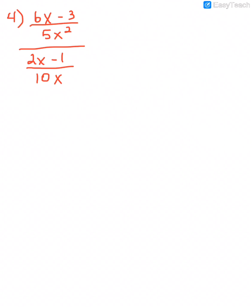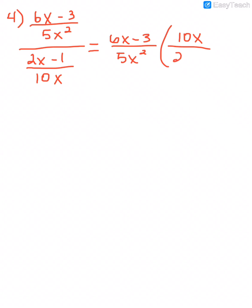Let's look at one last example. This complex fraction has a single fraction in the numerator and a single fraction in the denominator, so we don't need to combine terms first — we can move directly to the second step, which is to multiply by the reciprocal. So I take the numerator, which is (6x minus 3) over 5x squared, and multiply it times the reciprocal of the denominator, which is 10x over (2x minus 1). But before multiplying these rational expressions, I need to simplify.